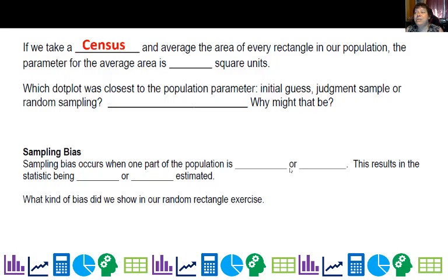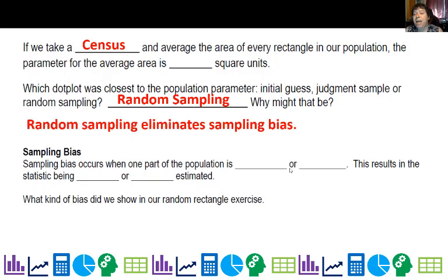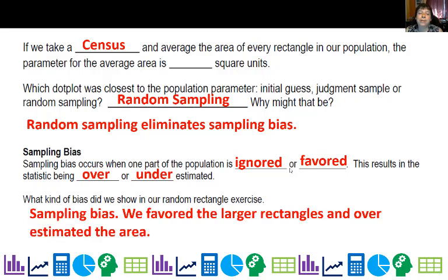So the main point is, is that if we are picking samples, do not use your judgment because it's sad to say, as much as we want to say we're unbiased, we do have biases we're not aware of. So if we were to take a census and average the area of every rectangle in our population, the parameter for the average is, and I'll come to class and I'll tell you. So which dot plot was closest to the actual value? It was the random sampling. And the reason was, is that it eliminates sampling bias. This occurs when one part of the population is ignored or favored. So we kind of ignored the little tiny one unit rectangles and we favored the larger ones. But do those little one unit rectangles have an influence? Absolutely. What ends up happening is that your result is being over or underestimated. We showed a sampling bias. We favored the larger rectangles and overestimated the area.